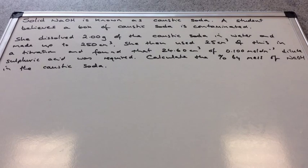She dissolved 2 grams of the caustic soda in water and made it up to 250 cm³. She then took 25 cm³ of this solution and used it in a titration. She found that 24.6 cm³ of 0.1 moles per decimetre cubed dilute sulfuric acid was required to neutralize the sodium hydroxide. We've got to calculate the percentage by mass of sodium hydroxide in that impure caustic soda.